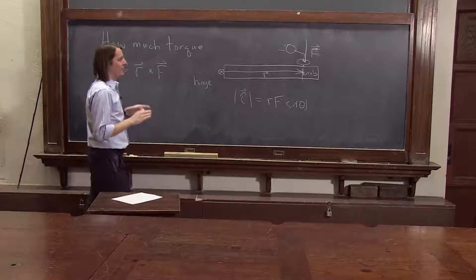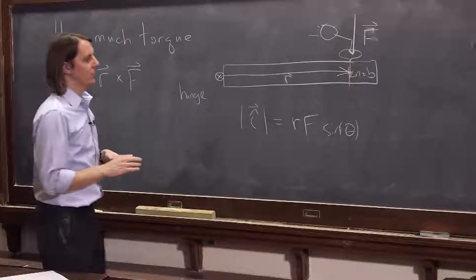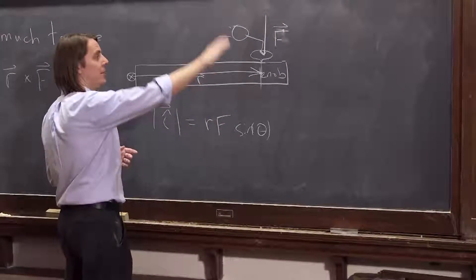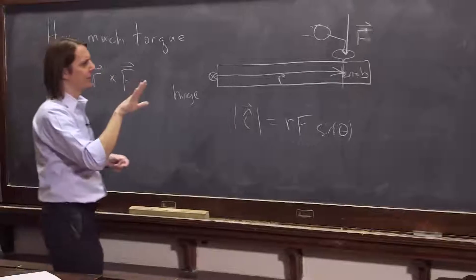The hard part is the direction of the torque. The direction of the torque is not the direction that the thing moves. Let's think about it for a second. It's R cross F. So in this case, R is this way and F is down. Right? F is down.